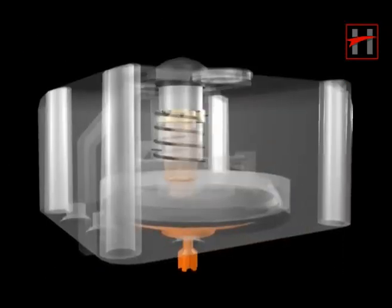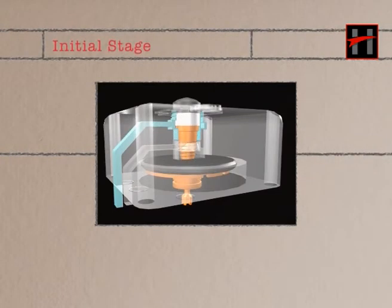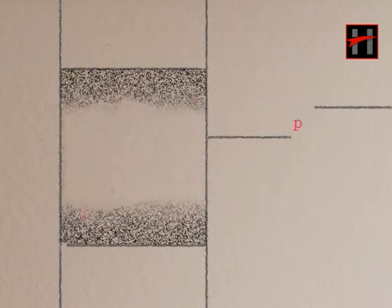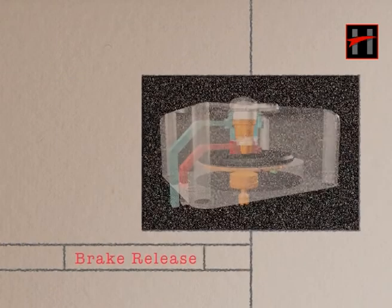Working of the relay valve can be divided into three stages: initial stage, brake application stage, and the brake release stage.